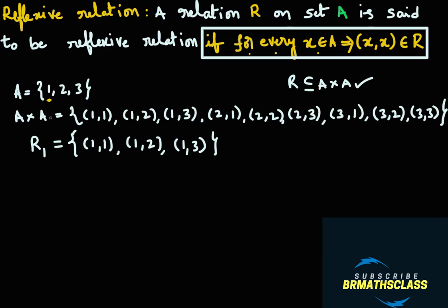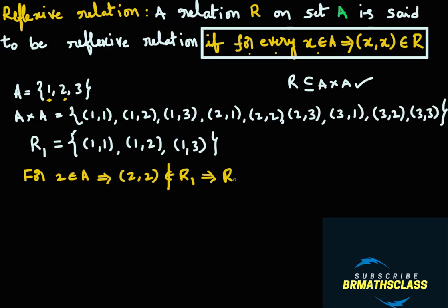You have to check for every element in set A. You take the element 2 in set A — is ordered pair (2,2) there in this relation? It is not there. So it fails to satisfy the condition. Because the element 2 is in set A but ordered pair (2,2) is not in relation R1, we say that R1 is not a reflexive relation.